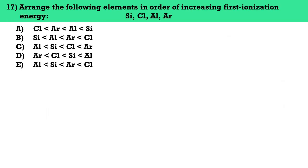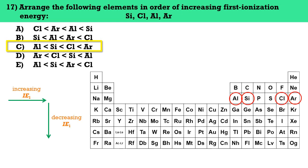Number seventeen, arrange the following elements in order of increasing first ionization energy: Si, Cl, Al, and Ar. The answer here is letter C. Moving left to right across a period, first ionization energy generally increases; moving top to bottom down a group, it generally decreases. Since Al, Si, Cl, and Ar all belong to the same period, the order of increasing first ionization energy is: Al < Si < Cl < Ar.